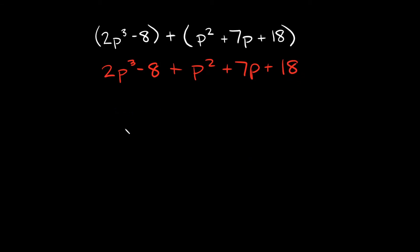Now you might notice there's nothing we can really combine, because there's a p cubed, a p squared, and a p — we can't combine any of those together. All we have left is minus 8 and plus 18. So the only thing we have to do is make sure we write our answer in standard form, which means writing our terms based on exponents from biggest to smallest.